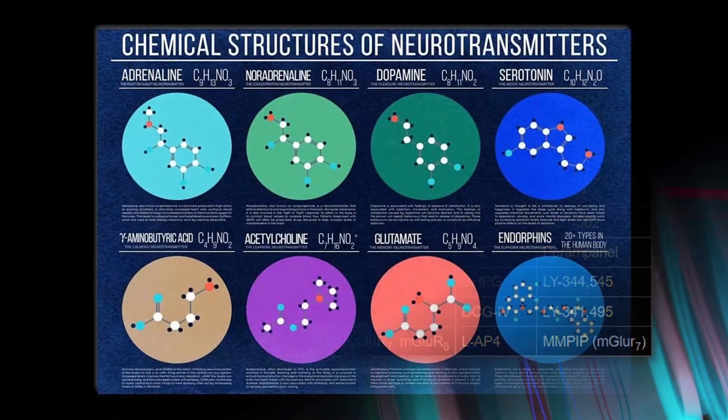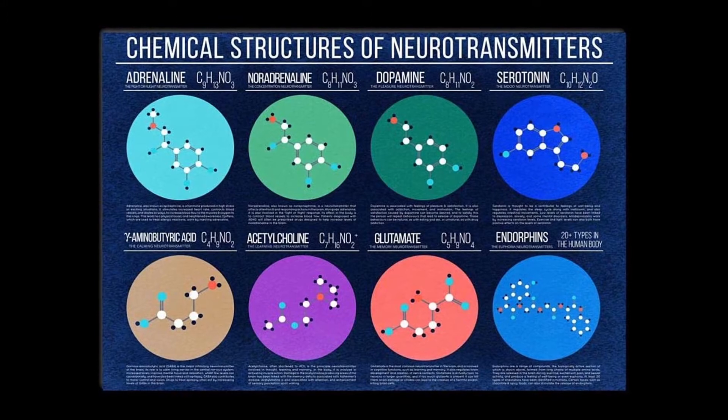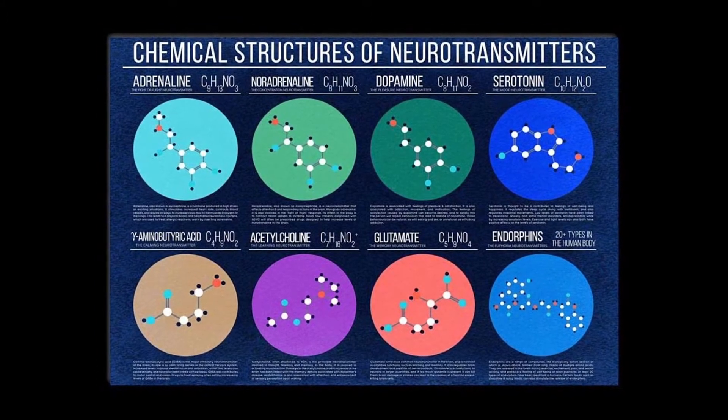Now another question would be, are there also receptors of different neurotransmitters in a single cell? And again, the answer is yes.